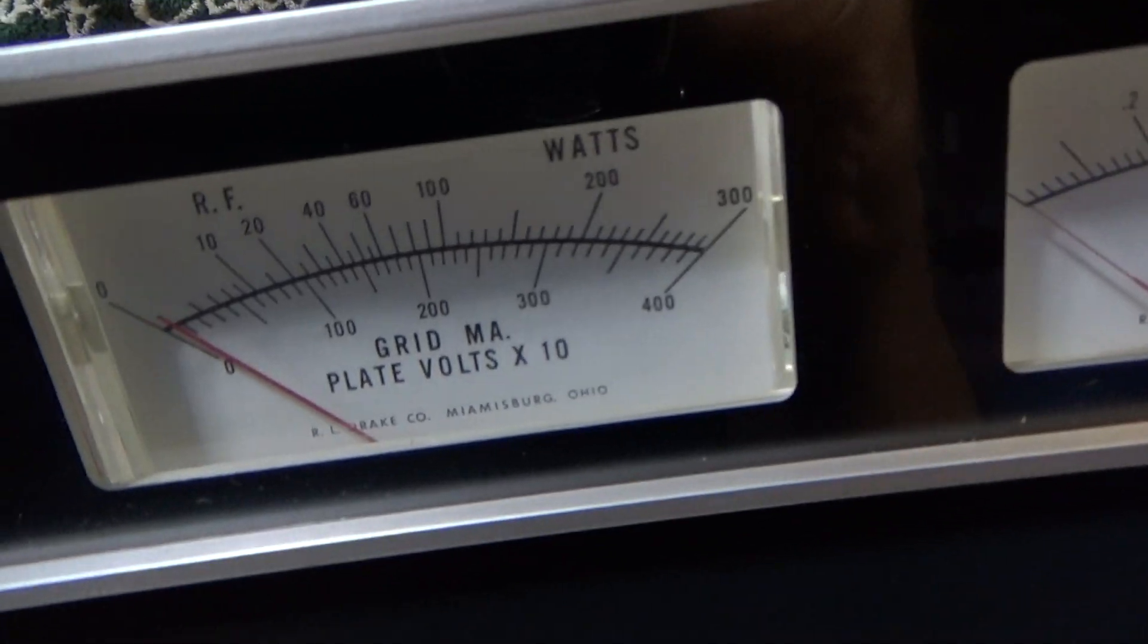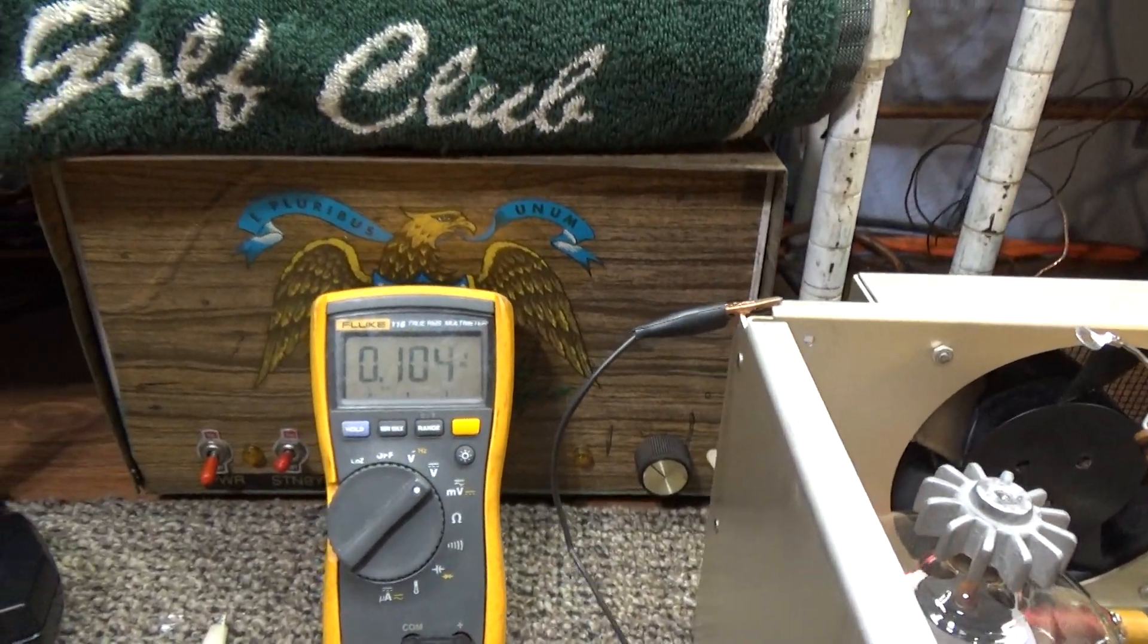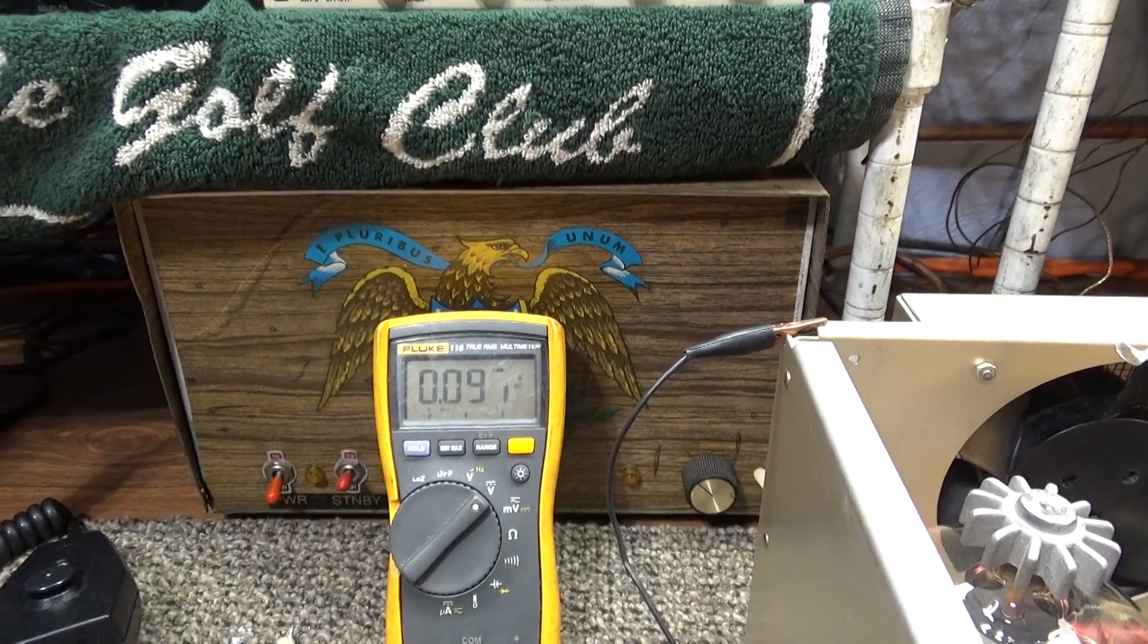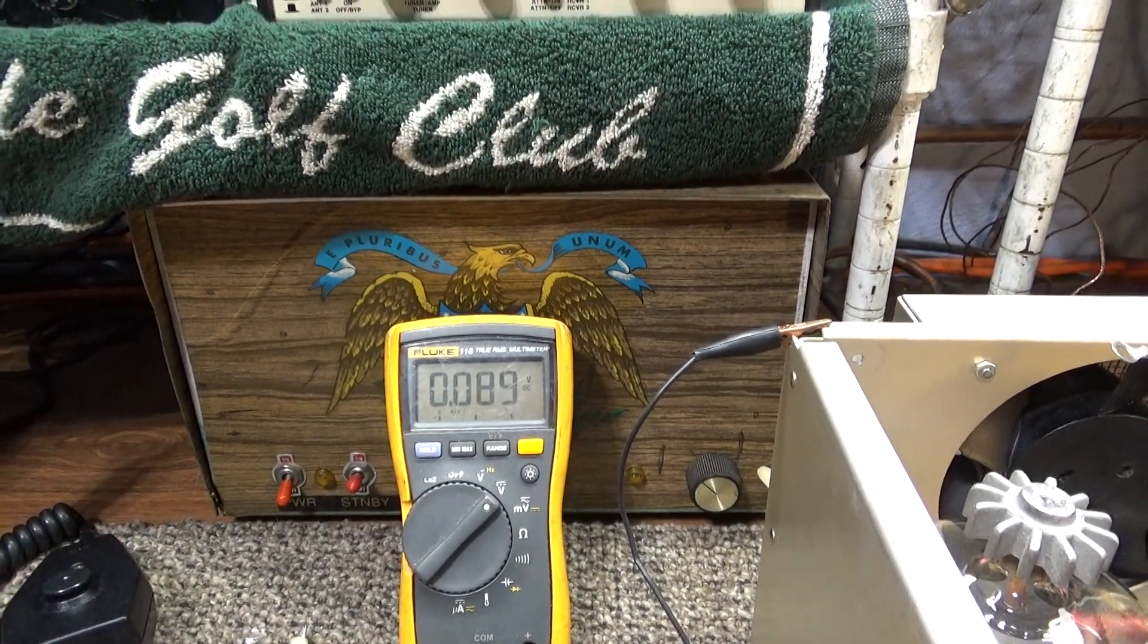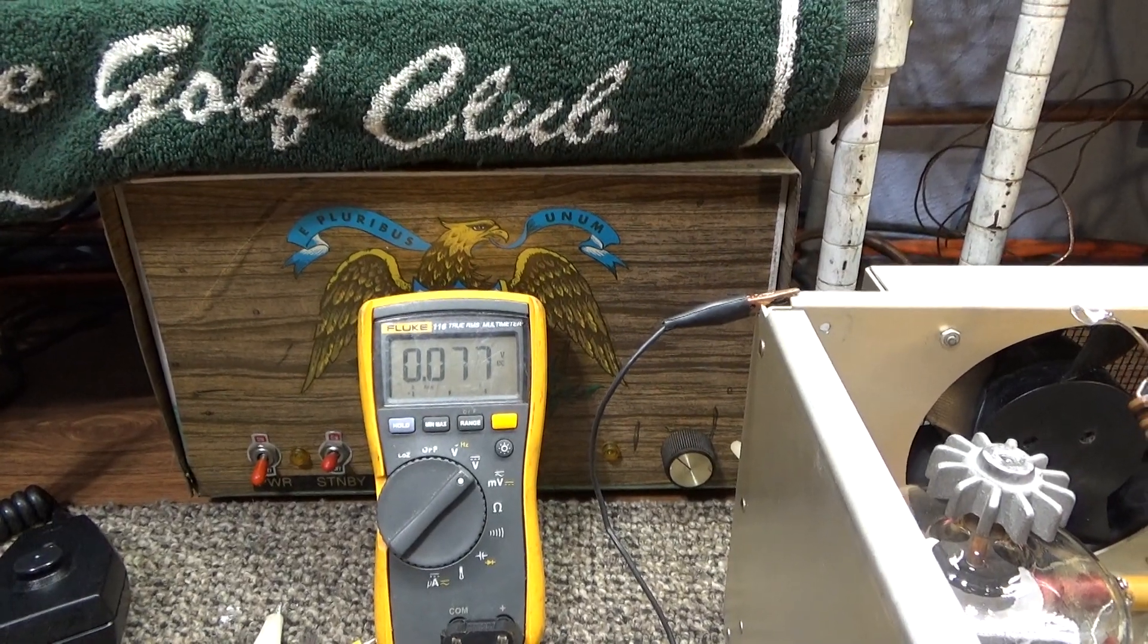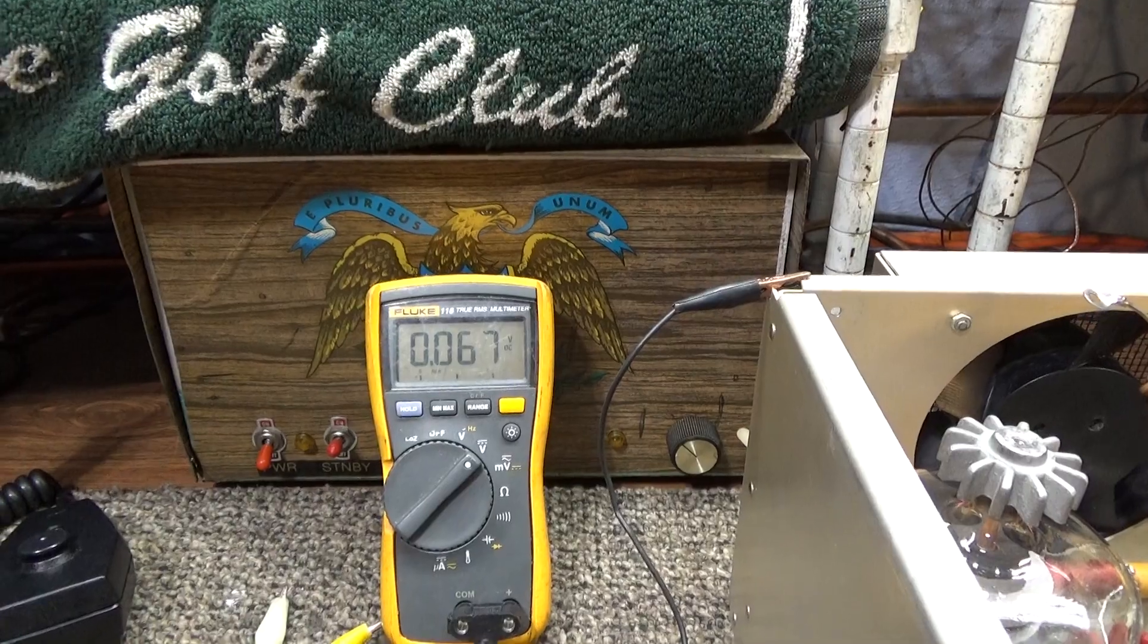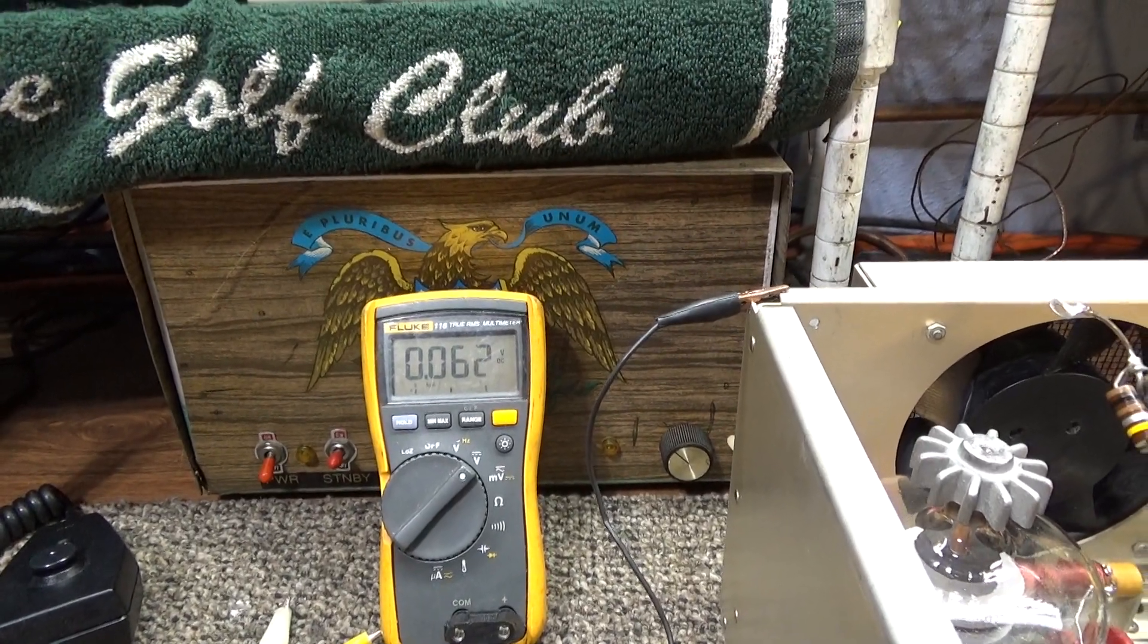So anyway, we're waiting for the voltage to go down a little bit more. We're going to put our probe on it—we're at 0.1, so that's 100 volts. And still going down. 70, 60 volts and all of that.